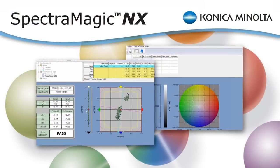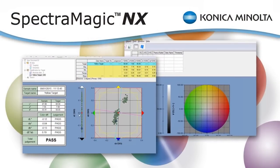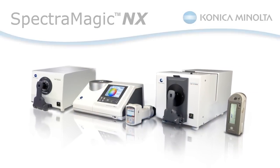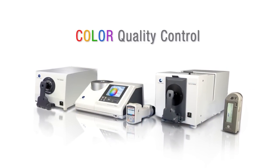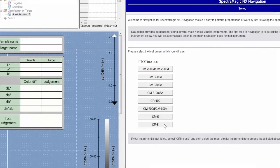Konica Minolta Sensing's SpectraMagic NX software is a complete quality control solution for the measurement and analysis of color. Use this powerful software with Konica Minolta Sensing's spectrophotometers and most colorimeters.